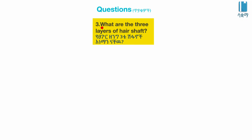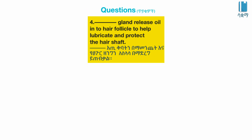What are the three layers of hair shafts? The three layers are the cortex, medulla, and cuticle. Sebaceous glands release oil into the hair follicle to help lubricate and protect the hair shafts.